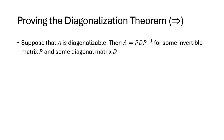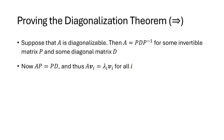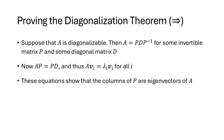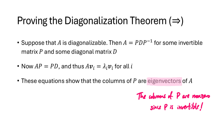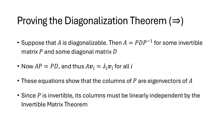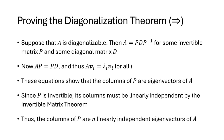Now for the proof. The theorem is an if and only if, so first assume A is diagonalizable — meaning A equals PDP inverse for some invertible P and diagonal D. Multiplying both sides by P on the right gives AP equals PD. So the two column formulas are equal, meaning Avi equals λi·vi for all i. This shows the columns of P are eigenvectors of A. Since P is invertible it has no zero columns, so these are non-zero eigenvectors, and by the invertible matrix theorem its columns are linearly independent — giving us n linearly independent eigenvectors of A.